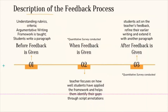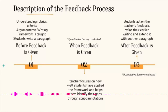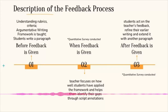There are essentially three steps. Before feedback is given, we go through certain things in the rubrics and then teach the argumentative writing framework. Then we get students to write a paragraph. The second step is after we collect the work and give feedback — at this point the teacher focuses on how well the students have applied what we taught in round one.